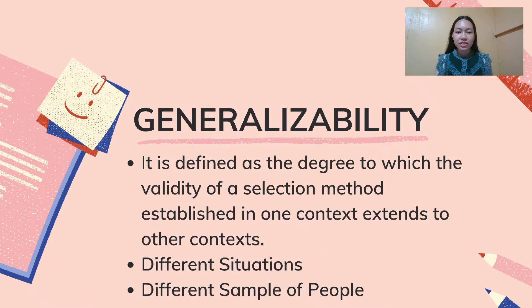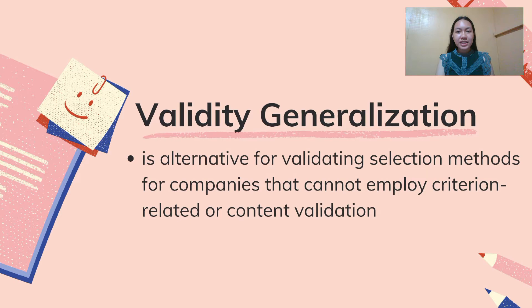Generalizability is defined as the degree to which the validity of a selection method established in one context extends to other contexts. These contexts include different situations — validity coefficients were situationally specific, meaning the degree of correlation between test and actual performance would vary from one organization to another — and different samples of people, where test results showed different subgroup validity, meaning validity coefficients on test-job performance pairs were different for people of different races and genders.